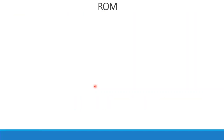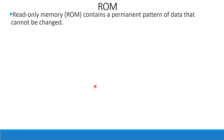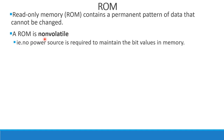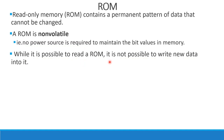ROM means read-only memory. Data is permanently stored and cannot be changed. Read-only memory contains a permanent pattern of data that cannot be changed — no power source is required to maintain the bit values in memory. While it is possible to read a ROM, it is not possible to write new data into it. As the name indicates, it is only possible to read a ROM, not write.